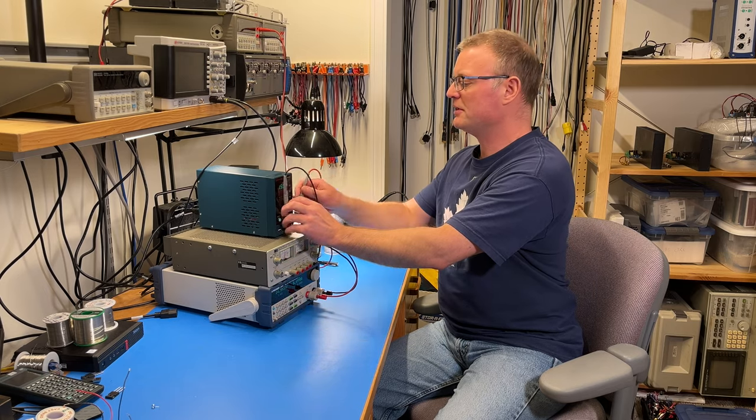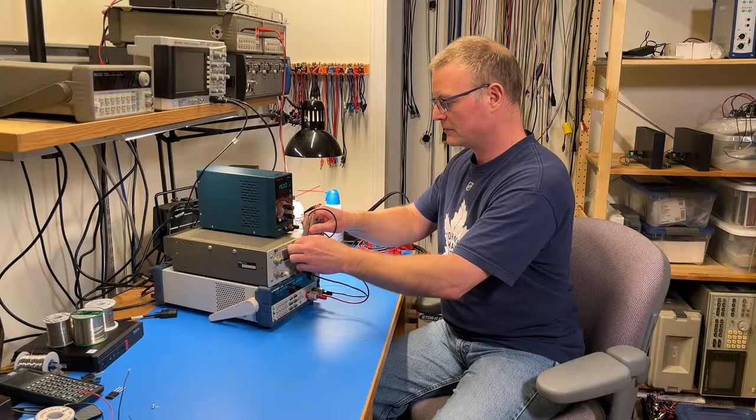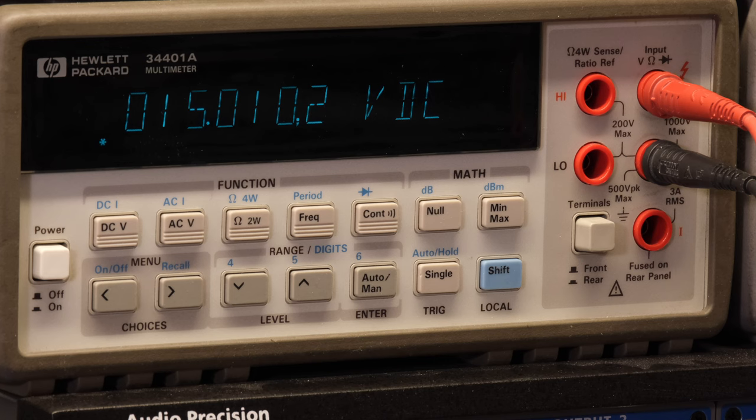So now it measures the difference between the load off and the load on. And we see the Hanmatech drops by two and a half millivolts. That's pretty good. Now let's repeat for the HP power supply.